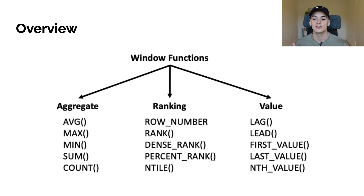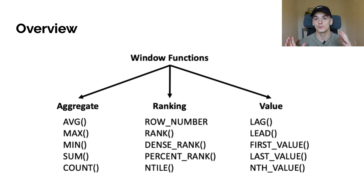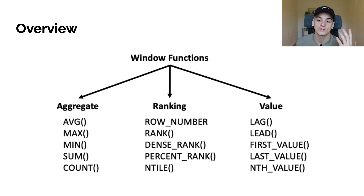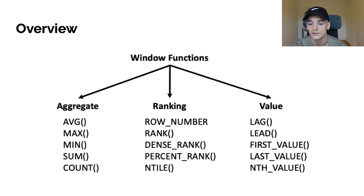In terms of window functions there are really three main categories. The first is aggregate functions — you might know these from your regular SQL queries: functions like average, max, sum, and count, which allow you to aggregate multiple rows into one output row. You're also going to be able to use ranking window functions, which allow you to put a rank on a specific row. You can also calculate percentiles or n-tiles. The last category is value functions — lag and lead allow you to look at the preceding or following row, and first value, last value, and nth value allow you to look at specific values as well.